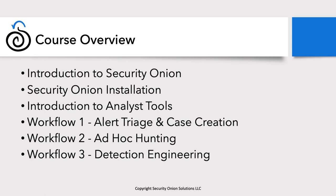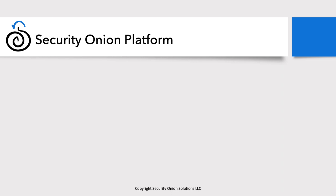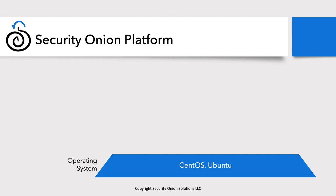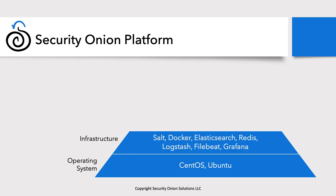Let's start with a quick introduction to the platform. When we talk about Security Onion, there are many different aspects, but they all start at the very bottom with the operating system. We currently support both CentOS and Ubuntu as a base OS. Almost everything within Security Onion uses Docker containers, which allows us to support installations on either OS. Salt stack is used to orchestrate and manage all these different Docker containers and their configurations, along with many other aspects of Security Onion.